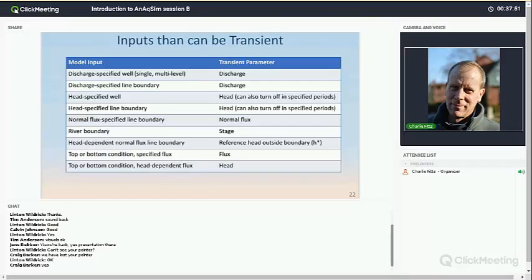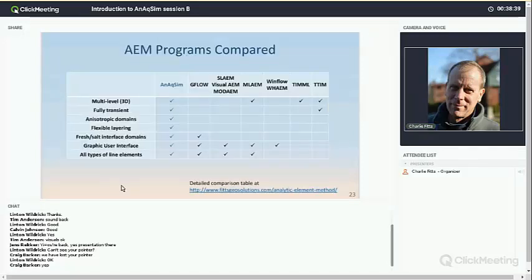Here are things that can be transient in AXIM. You have discharge specified wells and line boundaries. You can have head specified wells and boundaries where the head changes. You can have rivers where the stage changes. These top conditions, the flux or the head at a head dependent flux, can change with time. The head specified well and line boundaries can also be turned off in specific periods, which is handy for things like that dewatering simulation that I showed you, where the pumping got deeper and more extensive laterally with time in the simulation. So I turned some on and others off as that progressed.